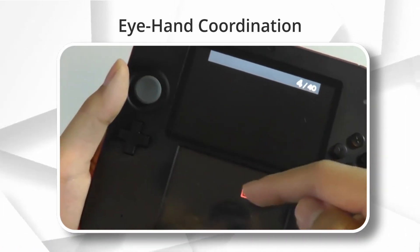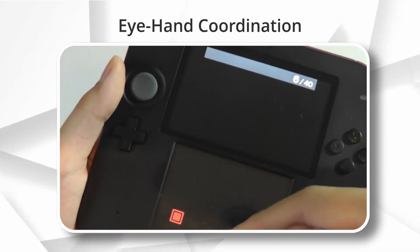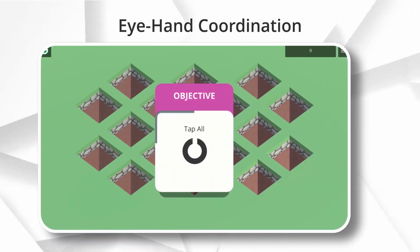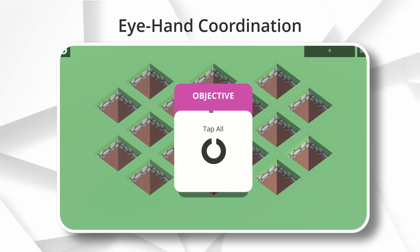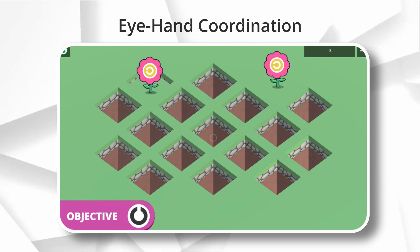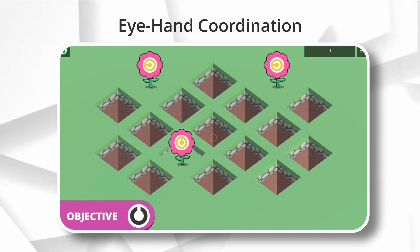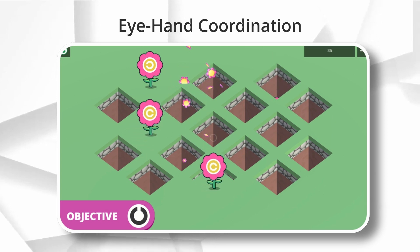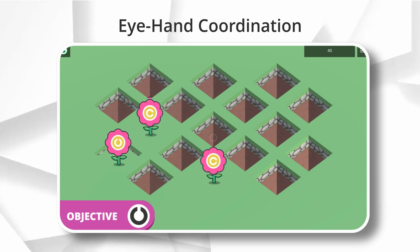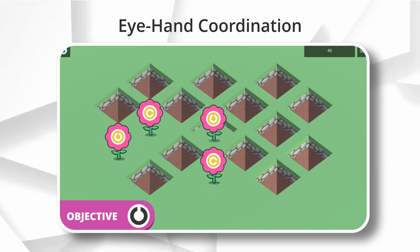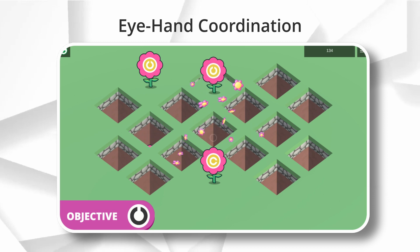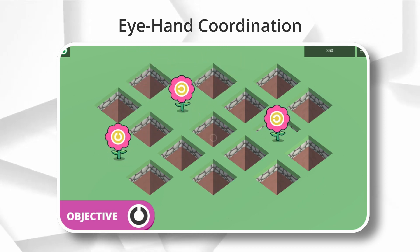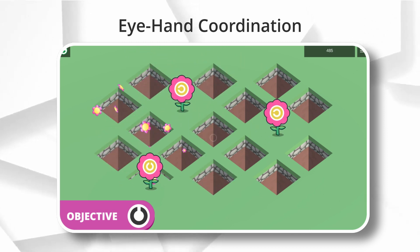Eye-hand coordination is the ability for your eyes and hands to work together. Flash Focus had a basic game where you would tap boxes that appear on the screen, like whack-a-mole. We revamped ours to look more 3D with flowers that sprout out of the ground. On top of that, we added an additional objective: tap only the flowers that have the letter C in the correct orientation.